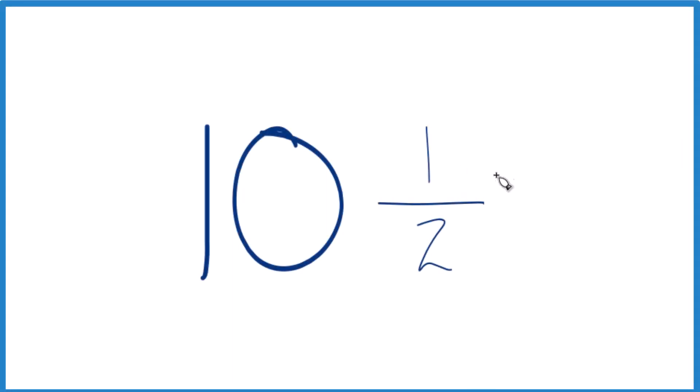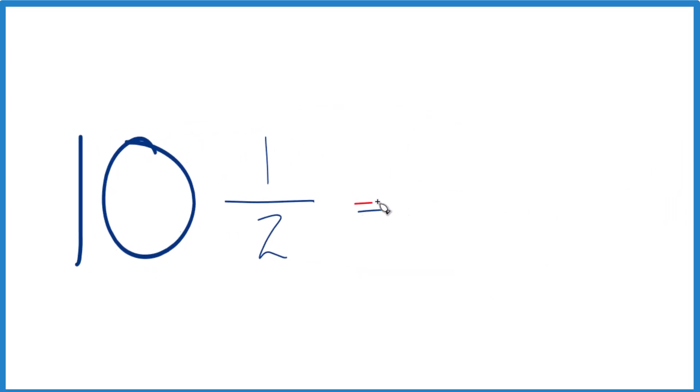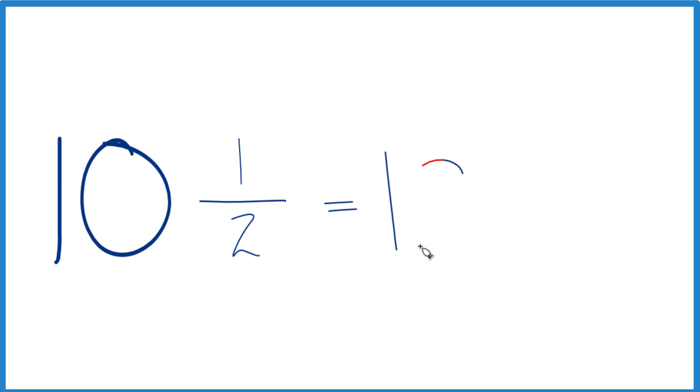So if you're asked to convert the fraction 10 and 1 half to a decimal, here's how you do it. Probably easiest is to take 10. That's already a whole number, so let's just put 10 here.